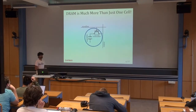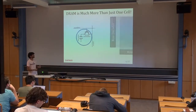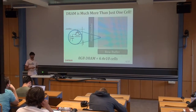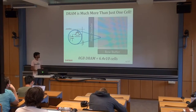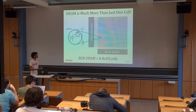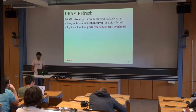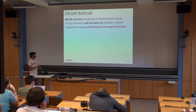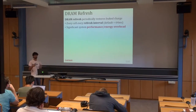DRAM is much more than just one cell. DRAM is composed of hundreds of billions of cells — an eight gigabyte DRAM module contains about 64 billion cells — and we have to make sure not a single one experiences a retention failure. To this end, we use DRAM refresh which periodically restores the charge in every single one of these cells. Every single cell is restored every refresh interval, which for current devices operates at every 64 milliseconds. This process results in significant system performance and energy degradation.